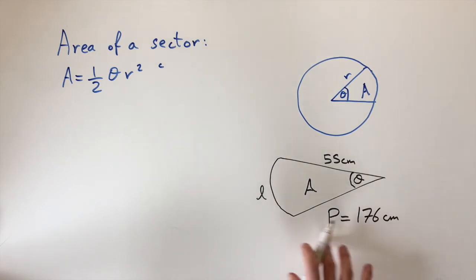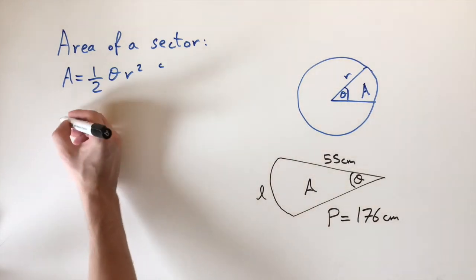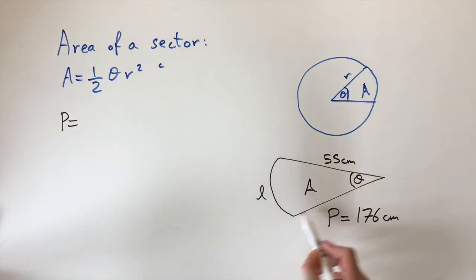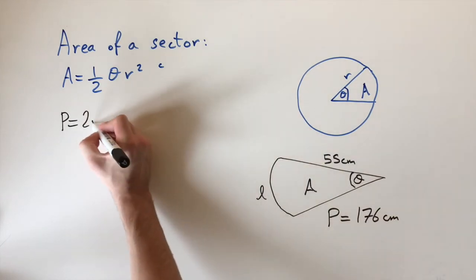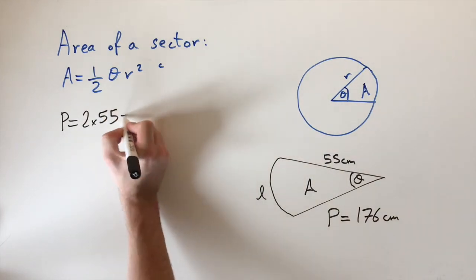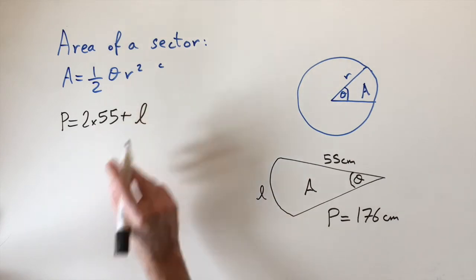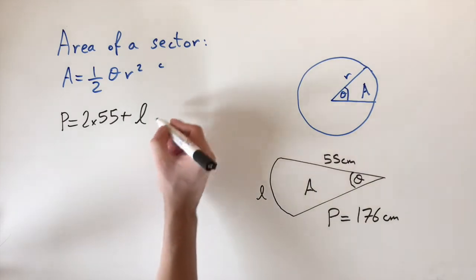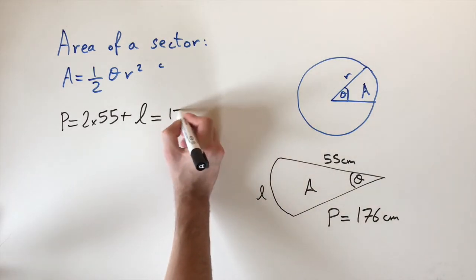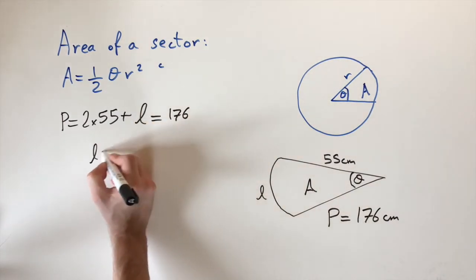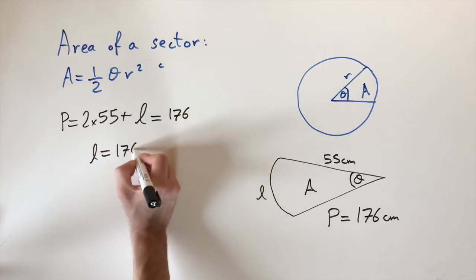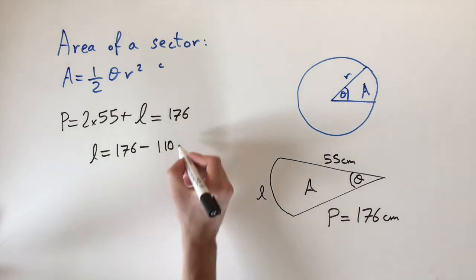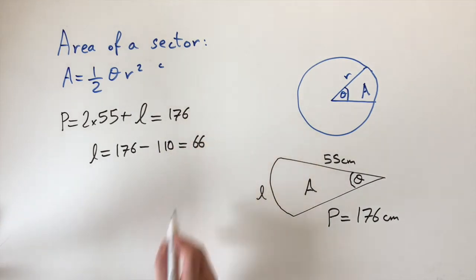To find the angle, let's first write an equation for the perimeter. The perimeter consists of two radii plus the arc length l: 2 × 55 + l = 176. Rearranging: l = 176 − 110 = 66. So the arc length is 66 centimeters.